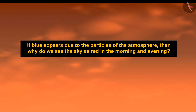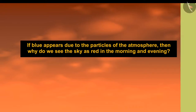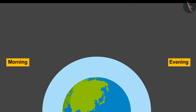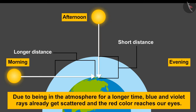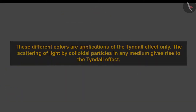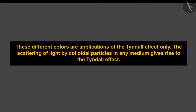So the sky appears blue due to scattering by atmospheric particles — but then why does the sky appear red in the morning and evening? At sunrise and sunset, the Sun is near the horizon, so sunlight travels through the atmosphere for a longer distance. Due to this longer path, blue and violet rays are already scattered away, and only the red color reaches our eyes. This scattering of light by colloidal particles in any medium is called the Tyndall effect. Sunlight coming through an open corner in a dark room is also an example of the Tyndall effect.